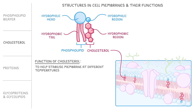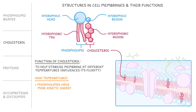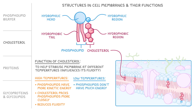The main function of cholesterol is to help stabilise the membrane at different temperatures by influencing its fluidity. At high temperatures, when the phospholipids have more kinetic energy and tend to move around faster and drift apart, cholesterol packs the phospholipids more closely together, which reduces the fluidity of the membrane. On the other hand, at low temperatures, when the phospholipids tend to pack together really closely, cholesterol prevents them from packing too tightly, which increases the fluidity of the membrane.